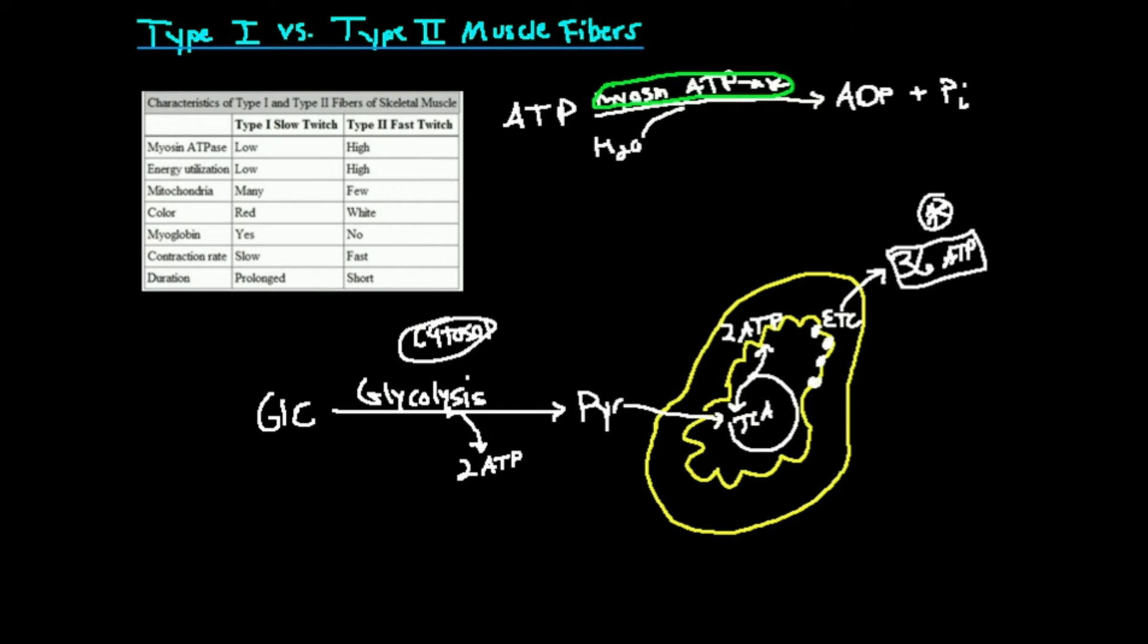There really aren't any myoglobin in type 2. But there are in type 1 muscle fibers. There's a lot of myoglobin. When oxygen binds to myoglobin, there's a shift in the emission of the heme moiety in the myoglobin. As a result, it looks red. So because there's a lot of myoglobin in type 1 muscle fibers, it appears red. Because there's few myoglobin or no myoglobin in type 2 muscle fibers, it just looks white.